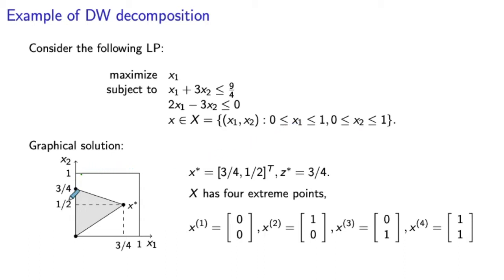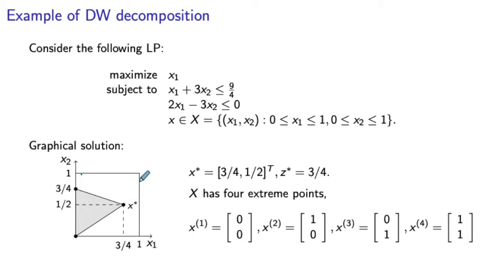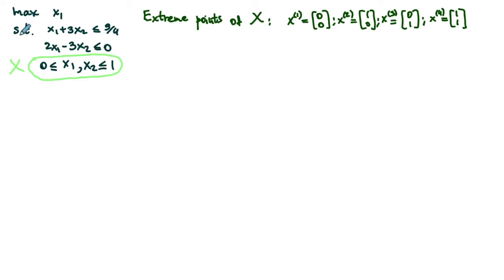This problem is solved graphically, and we can see that the feasible region is given by this triangle. We are maximizing x₁, so clearly the optimal solution is x* with x₁* equal to three-fourths and x₂* equal to one-half. The set X, which represents the simple constraints, has four extreme points: the origin, (1,0), (0,1), and (1,1). We will apply Dantzig-Wolfe decomposition to solve this LP.